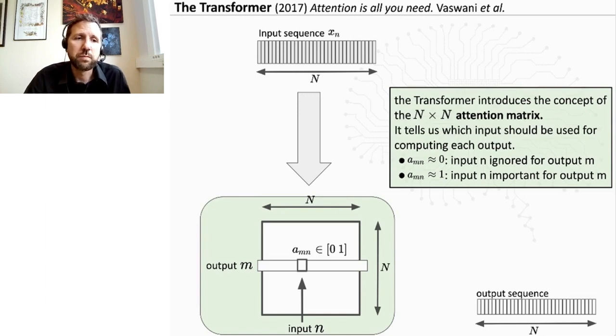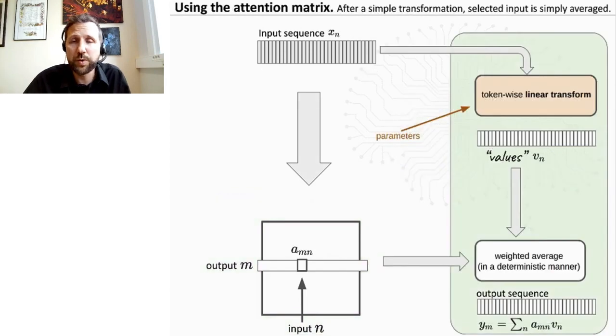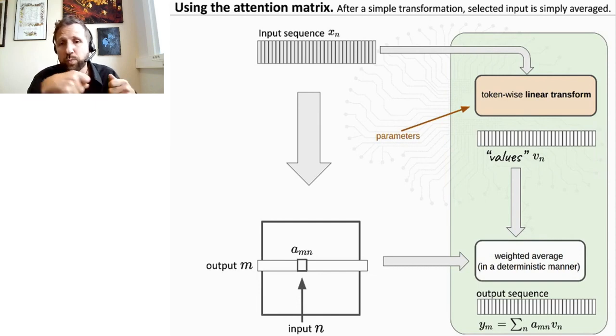So let's assume for now that we have this attention matrix. We'll see how we compute it later. How do we use it? So what we do is that we start to apply some linear transform, some simple token-wise transform. So on each token we apply some transformation and we get what we call the values. And then it's pretty simple to compute the output sequence. So for each output, we will average all the values weighted by the attention coefficients. So the output is just a simple average of the values weighted by the attention coefficients.